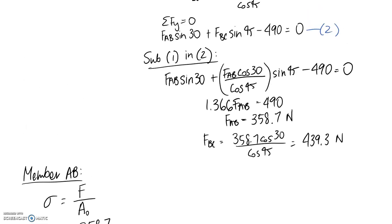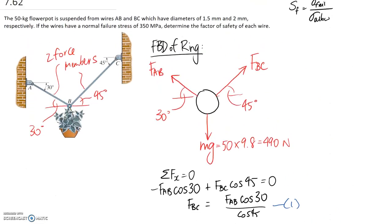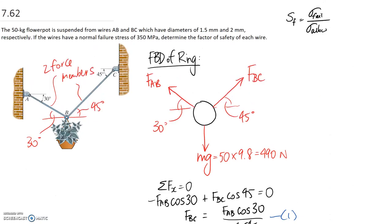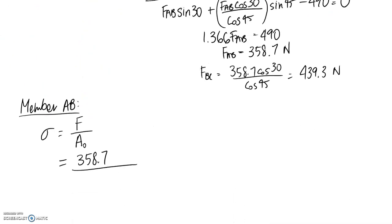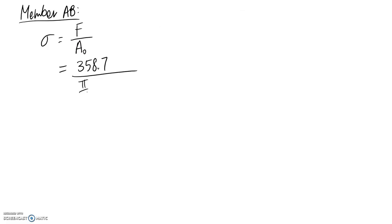Now if we go back to the question we were told some information about this. We were told that AB has a diameter of 1.5 and BC has a diameter of 2. So we can use this to work out our cross-sectional area. It's going to be pi on 4 multiplied by the diameter squared. So 1.5 squared goes in here. So this becomes 203 megapascals.